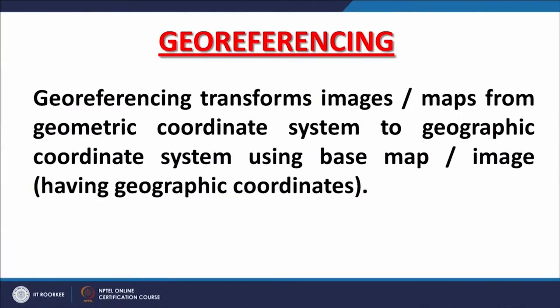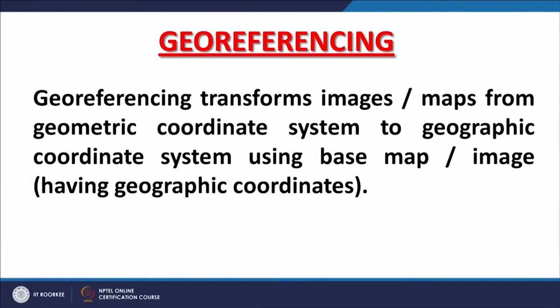Georeferencing transforms images or maps — even maps can be georeferenced. For example, if I have scanned a Survey of India toposheet, the toposheet may have latitude and longitude marked in print, but as a raster image its origin is at the top left corner, meaning it is still in the geometric domain. So this technique is required to bring geographic coordinates into the image.